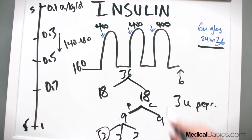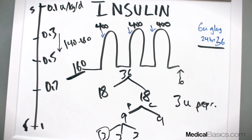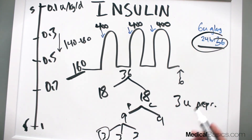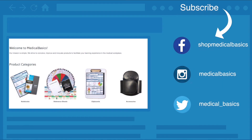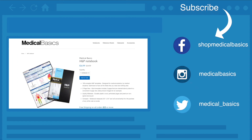That's how I adjust long-acting insulin — it's all based off the fasting sugar. In summary: use a conversion factor to calculate the 24-hour insulin requirement, give one-third of the calculated long-acting dose on day one with a correctional scale, then on day two adjust long-acting based on fasting sugar and add pre-prandial insulin for tighter control. Hopefully this helps with insulin dosing — check out medicalbasics.com for more educational resources, and subscribe for more tips and lessons.